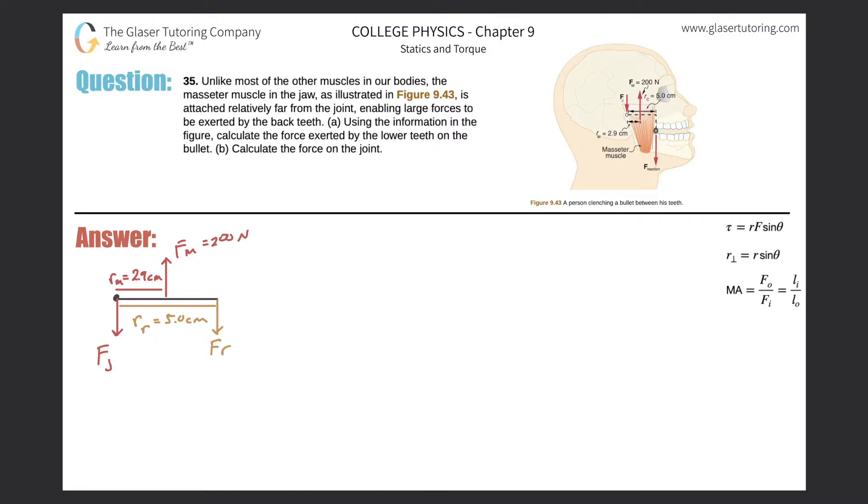Number 35. Unlike most of the other muscles in our body, the masseter muscle in the jaw, as illustrated in Figure 9.43, is attached relatively far from the joint, enabling large forces to be exerted by the back teeth. Letter A: Using the information in the figure, calculate the force exerted by the lower teeth on the bullet.